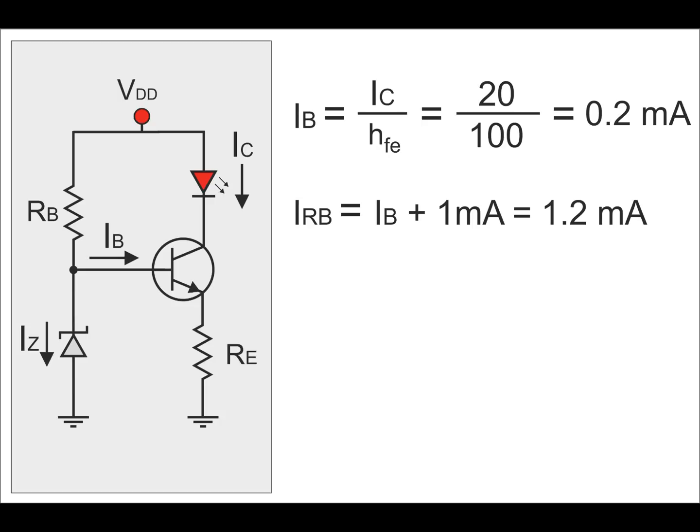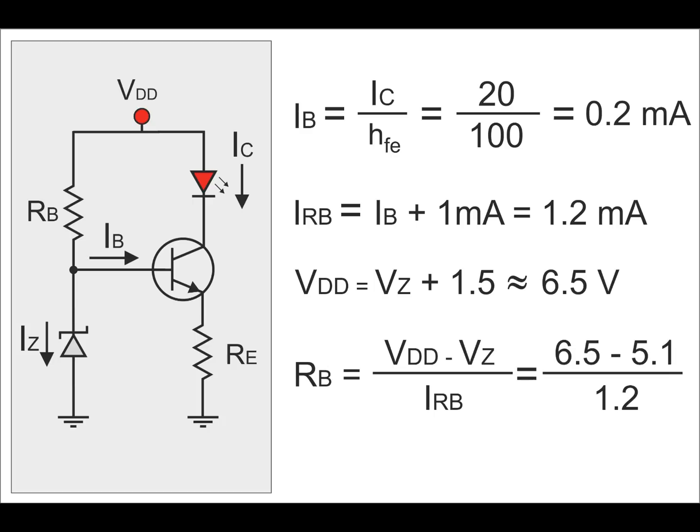We can now calculate the base resistor with Ohm's law. To push this example to the limits, I will calculate the resistor for minimum voltage possible, which is about 1.5 volts higher than the Zener voltage, and that will be 6.5 volts. After some calculations, we find that the resistor must be 1166 ohms, so I will use a 1 kilo ohm resistor.